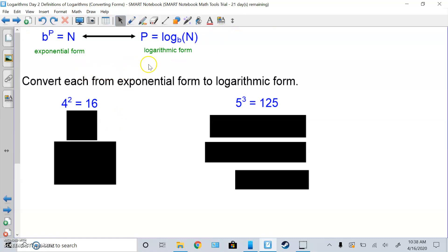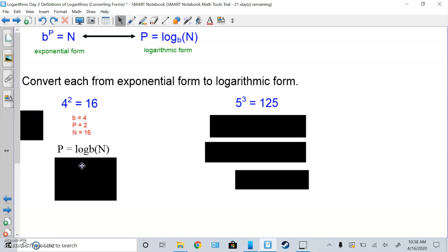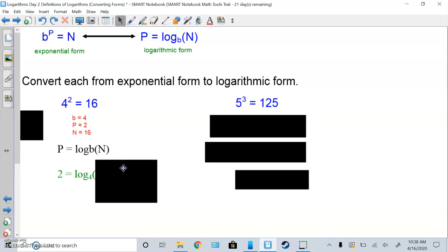Convert each exponential form into a logarithmic form. The first method kids like is they like just labeling each letter. So if I look at this, 4 squared equals 16, that's a true fact. We know b is 4, that's the base. The power of the exponent p is 2, and the answer is number 16. Once you know those three letters, you just plug into the formula. So they want log form. You replace p with 2, equals log base b is 4, and the number n is 16.